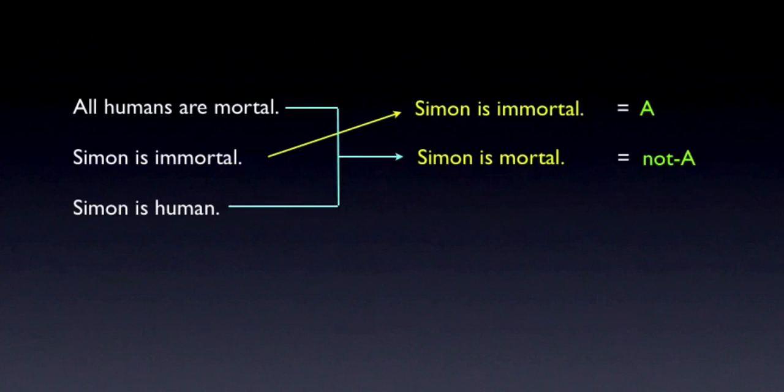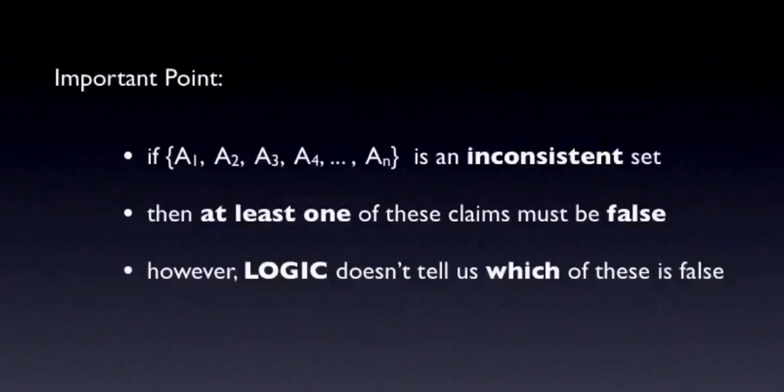This example helps illustrate another important point about inconsistent sets of claims. If we're given a set of claims that we know is inconsistent, then we know that at least one of the claims in the set must be false.